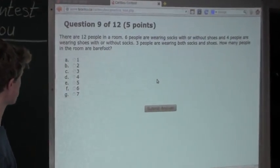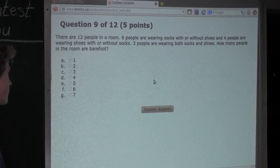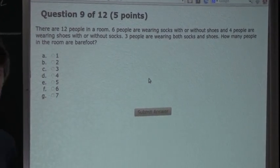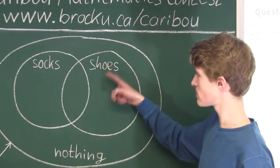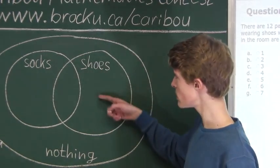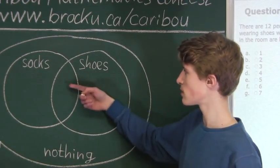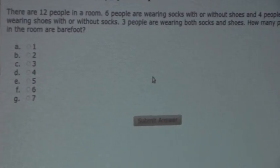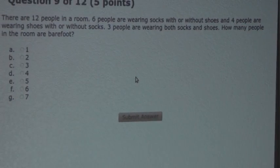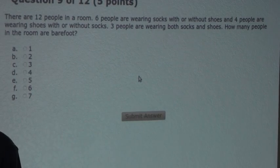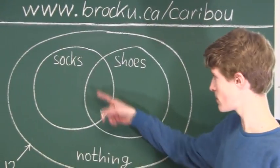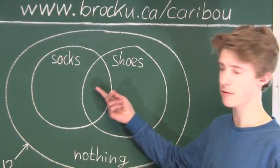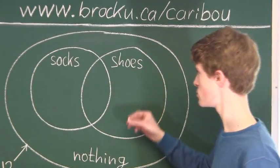We know that there are 4 people wearing shoes for sure, with or without socks. Again, we know they are wearing shoes, but we don't know if they are only wearing shoes or shoes and socks. Then we know that 3 people are wearing both socks and shoes, so we place 3 in the overlapping middle section.